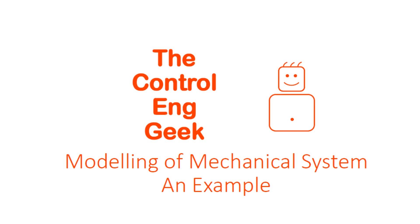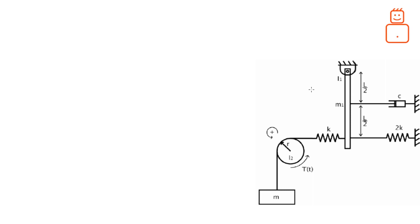Let's jump into the example. We have a mass connected through a rope to a pendulum via a spring and pulley. The pendulum is also affected by a damper and a spring. This system cannot be modeled directly since we need to make some assumptions first.